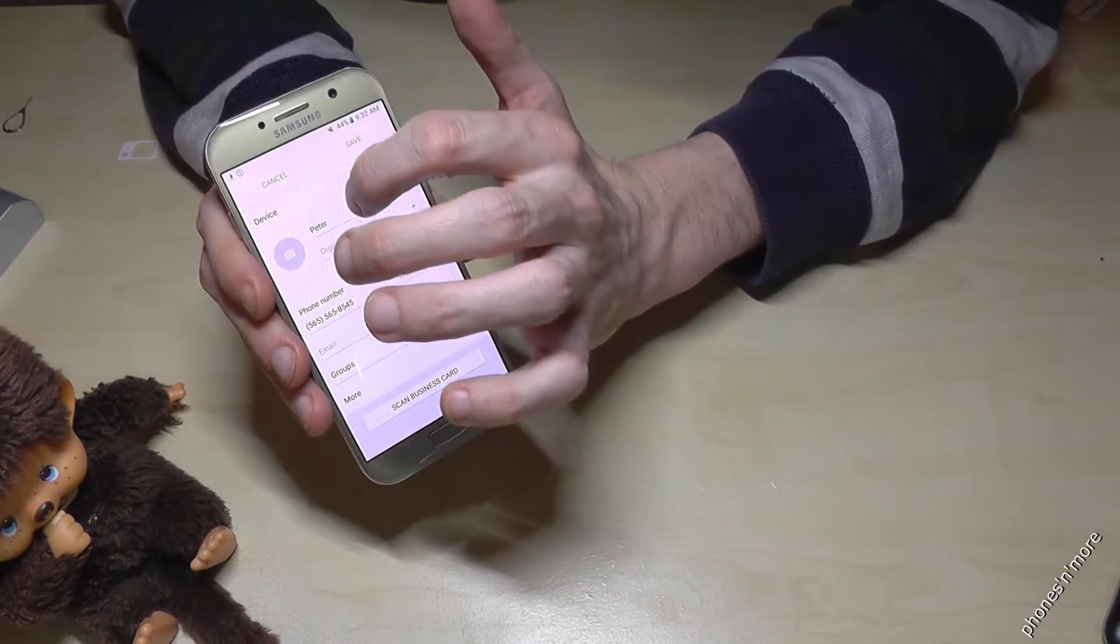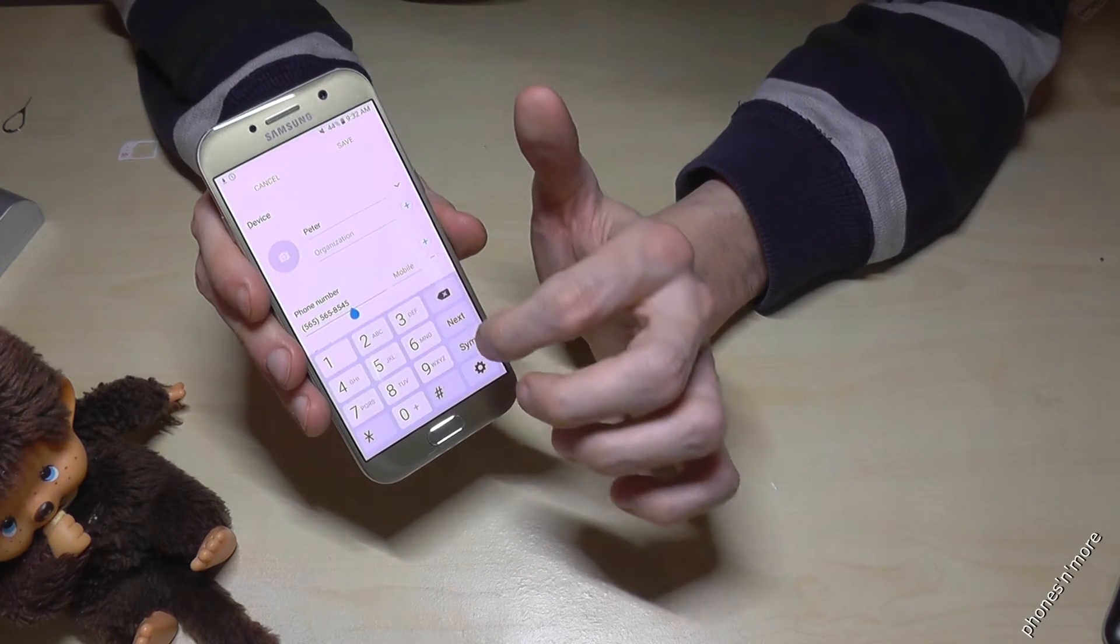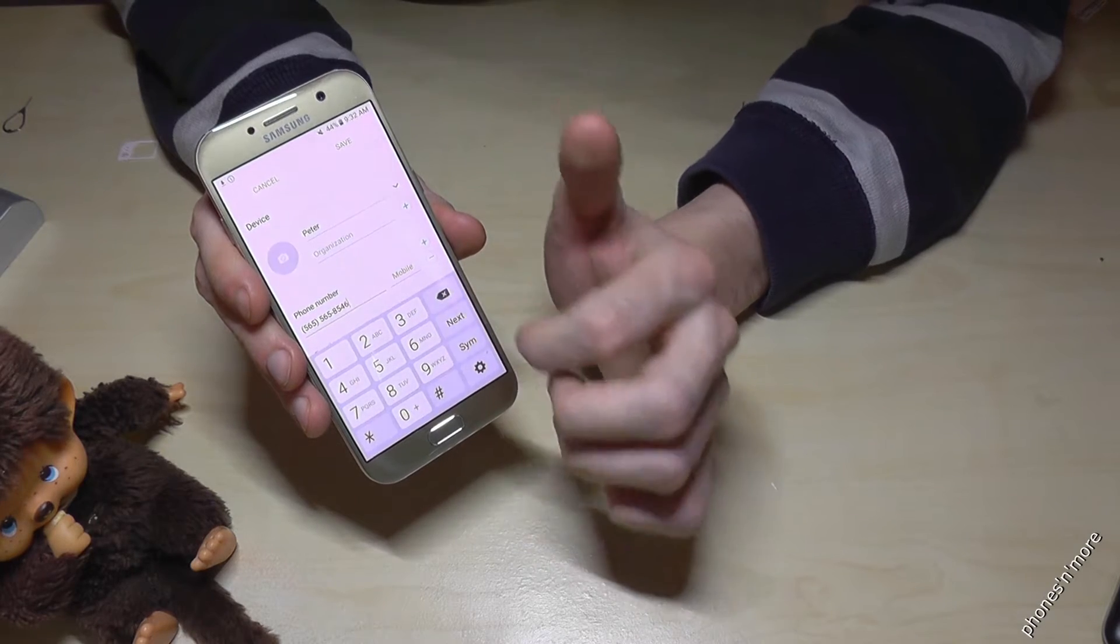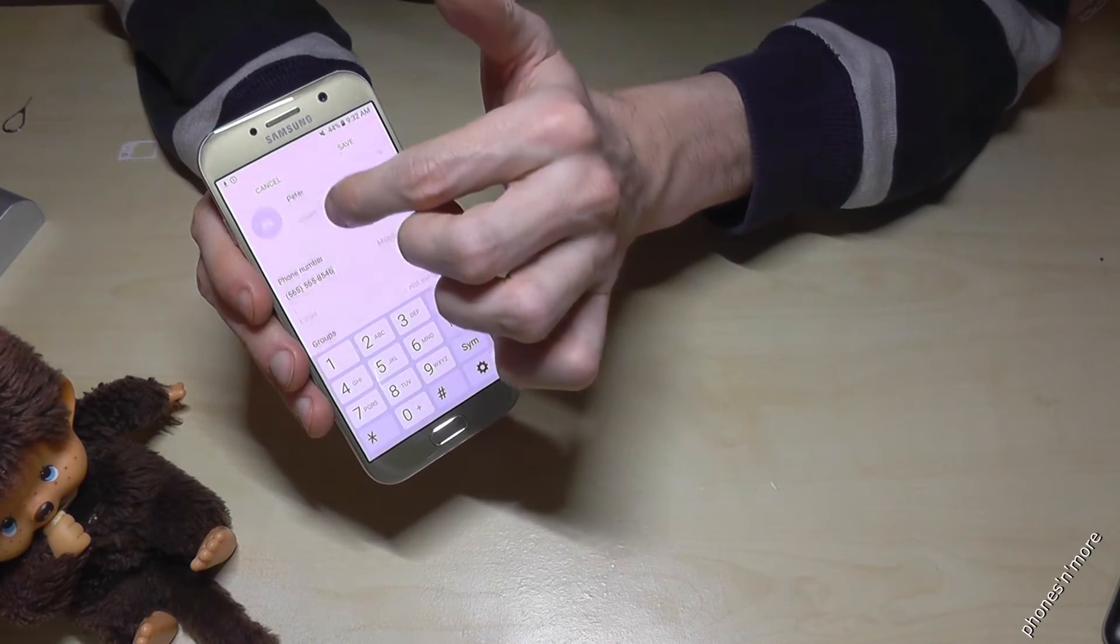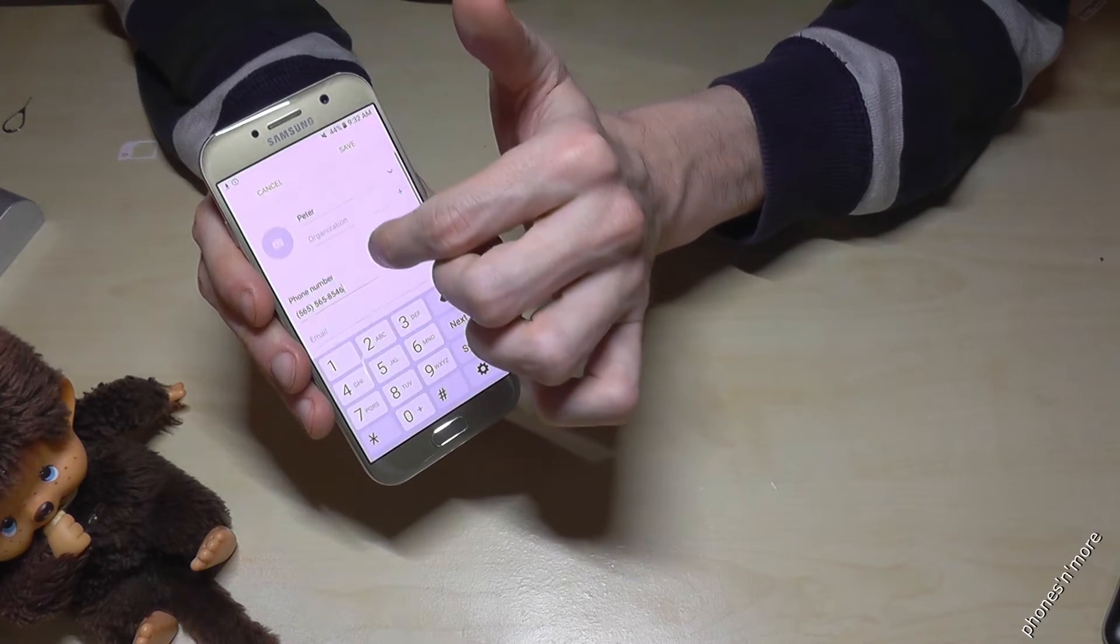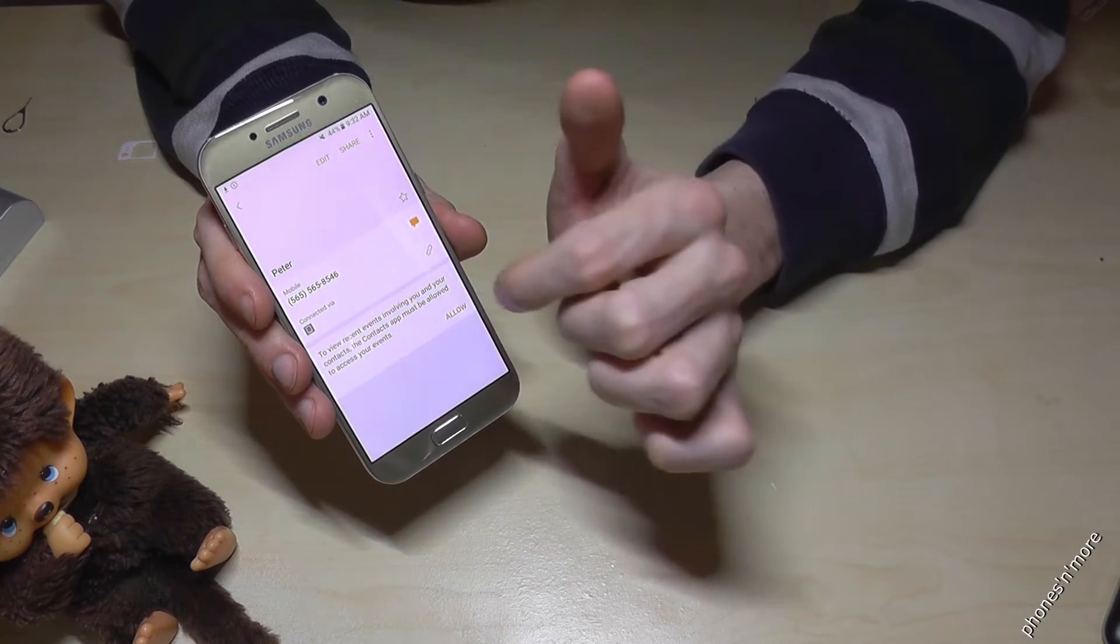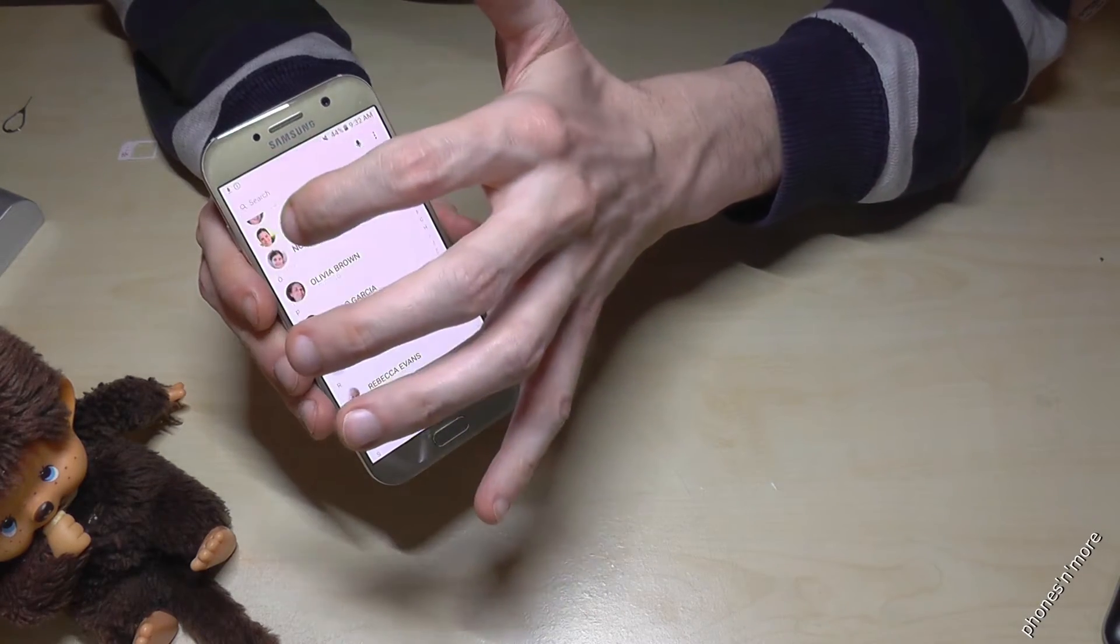And then you can add maybe a last name, or you can change the number in case the number was wrong, or if you want to add some stuff, you want to put them in a group or something like this. And after you are ready, you just go on save again. And then Peter is there with the correct number.